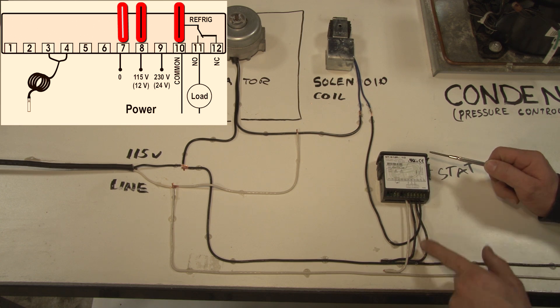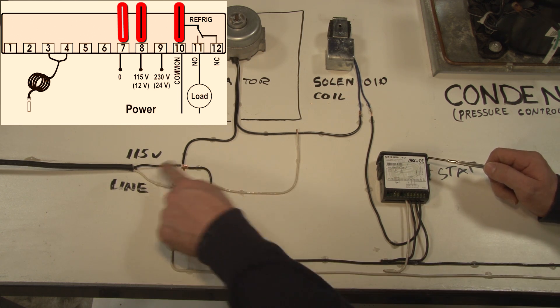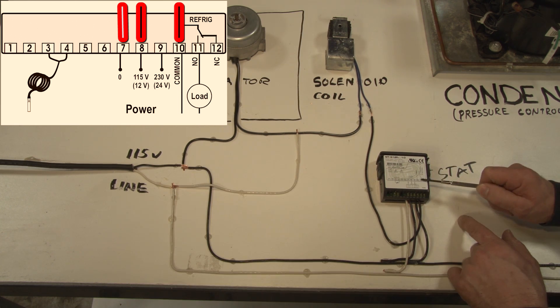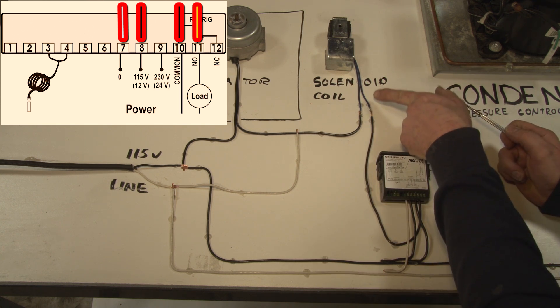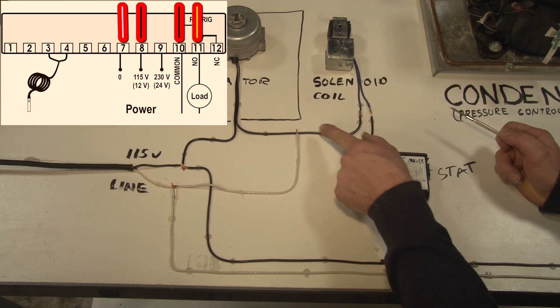Terminal 10 is our control circuit common which is also connected to our hot. And terminal 11 which is our normally open control circuit goes directly to our solenoid valve.